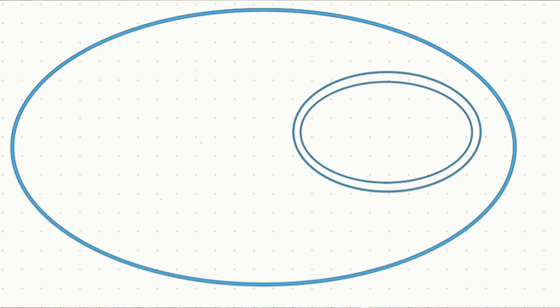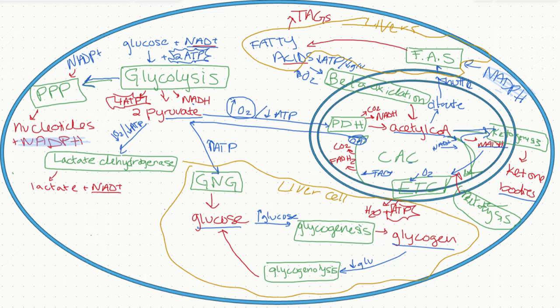There are 13 major metabolic pathways that you need to know for the MCAT. In the next 15 minutes, I'm going to teach you every single one of them, which means at the end of this video, this cell will look like this, and you'll actually understand it. So let's get started.